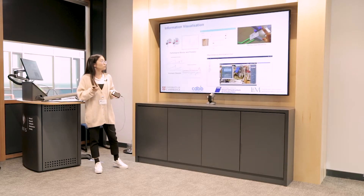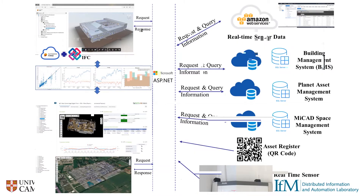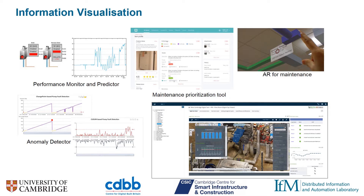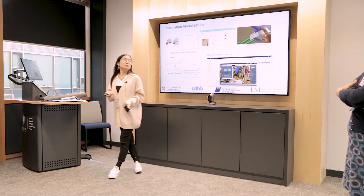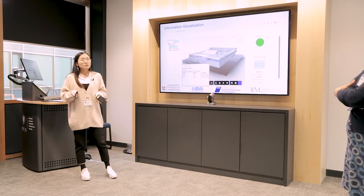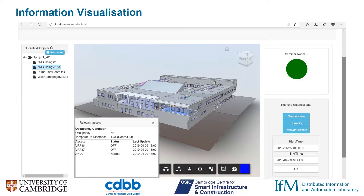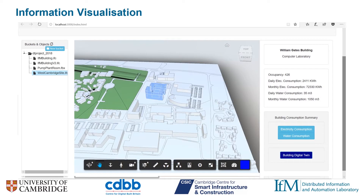Both platforms support several applications such as monitoring performance, abnormal detection, and AI technologies. At the building level, it can monitor conditions and highlight failed assets. At the city level, it can monitor electricity consumption and water consumption.